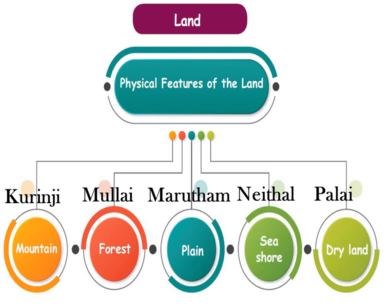Land is an important element. Based on how the land appears, its physical features, it is divided into different types. In our Sangam age, the land was divided on the basis of the work done by the people. They were Kuringi, Mullai, Marudam, Neythal, and Palai.